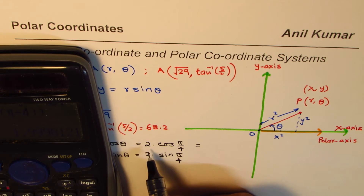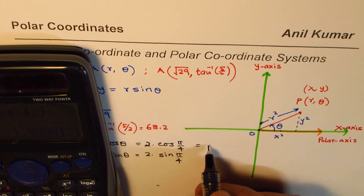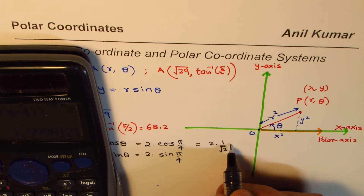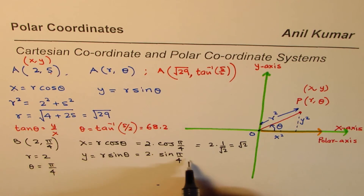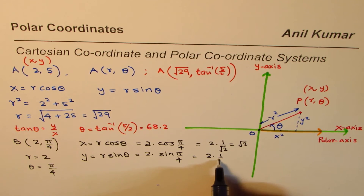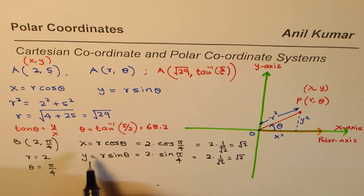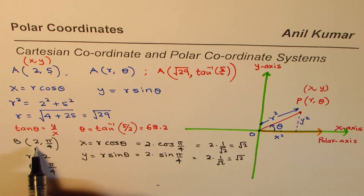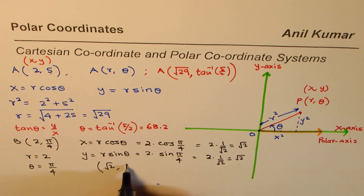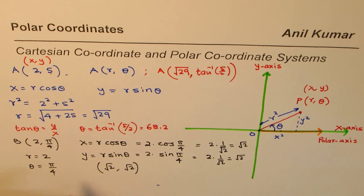Since π/4 corresponds to a special triangle where cos(π/4) = 1/√2, we get 2 × (1/√2) = √2. Similarly, 2·sin(π/4) = 2 × (1/√2) = √2. So the coordinate points corresponding to (r=2, θ=π/4) are (√2, √2). That is how you convert from polar coordinates to rectangular coordinates. I hope that helps — thank you and all the best.